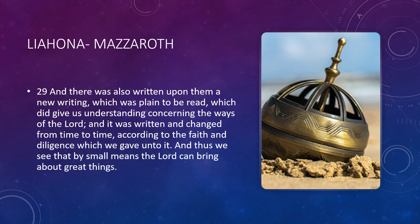Going back to 1 Nephi 16, verse 29: And there was also written upon them a new writing, which was plain to be read, which to give us understanding concerning the ways of the Lord. And it was written and changed from time to time, according to the faith and diligence which we gave unto it. And thus we see that by small means the Lord can bring about great things. The idea that the Liahona is connected to the Mazerot, or the zodiac above, is the idea that the prophetic traditions of ancient Israel are connected to the stars. Why the stars? Specifically because that's probably the one thing mankind really cannot change. They may be able to obscure our understanding or withhold knowledge about what the ancient meanings of these signs were in the heavens, but they cannot change them.